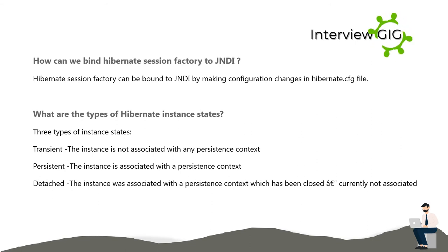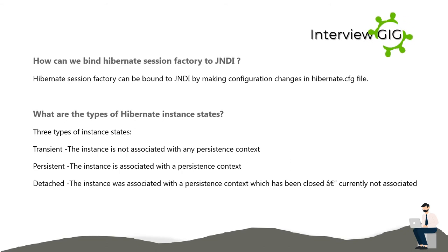What are the types of Hibernate instance states? There are three types of instance states: Transient — the instance is not associated with any persistence context; Persistent — the instance is associated with a persistence context; Detached — the instance was associated with a persistence context which has been closed, and is currently not associated.